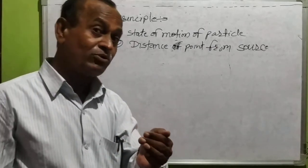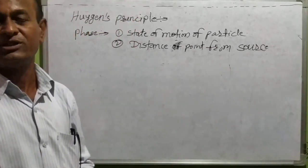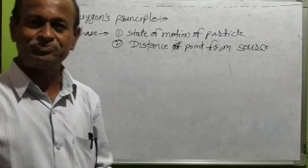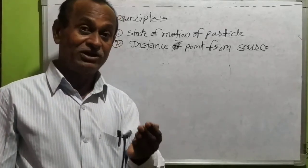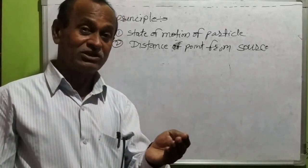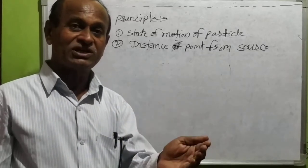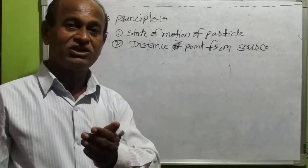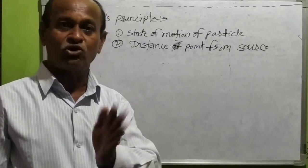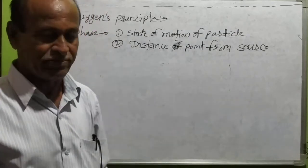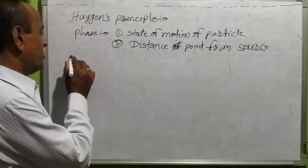The quantity which describes the state of oscillation is called phase of SHM. Now we have to define another term.